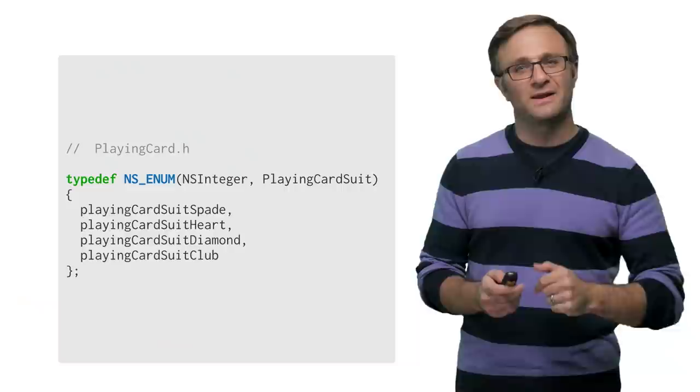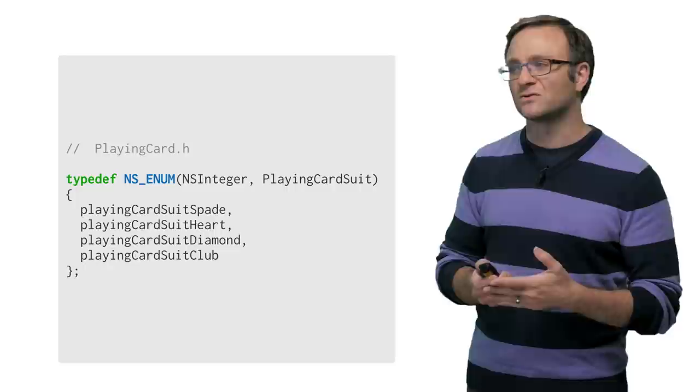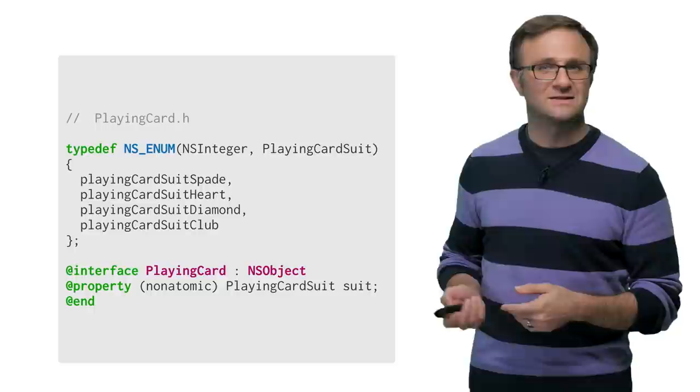So for this example, let's say that I am building a card game app that uses standard playing cards, and within my playing card.h file, I decide to create an enum for the suit. So here we go. Looks pretty normal so far, right?